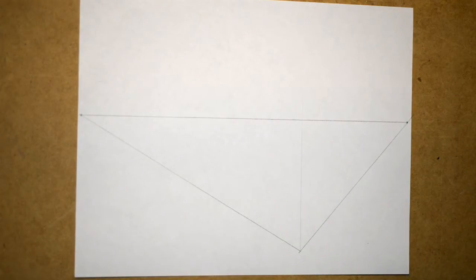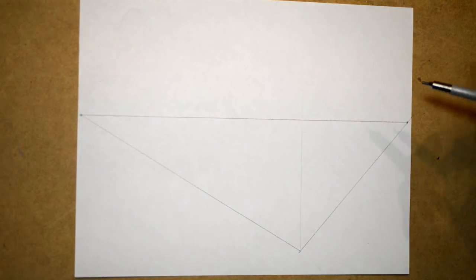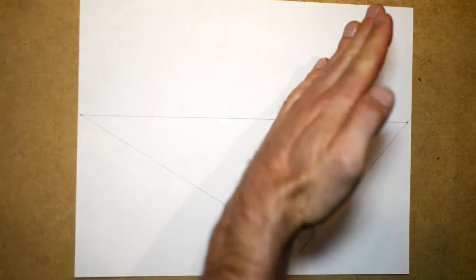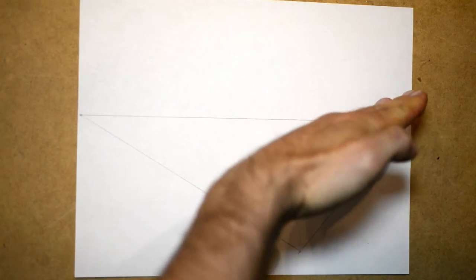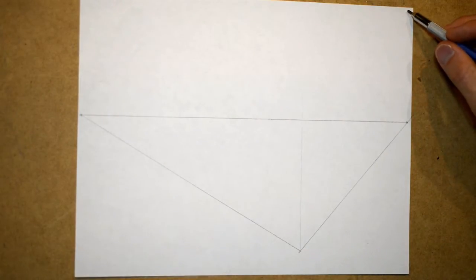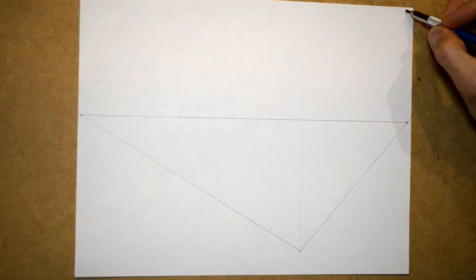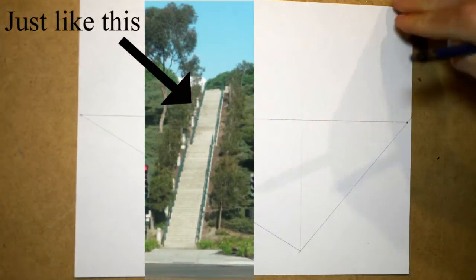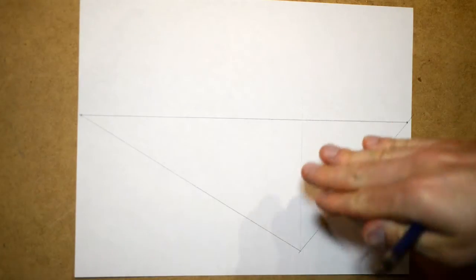I've placed this long vertical line to show you where the edge or corner of the stairs is going to be located. To set up stairs, there are a few rules. First, you want to make sure that the slope — the incline of the stairs, how high or flat the stairs are sloped — that incline is determined by how high you place the point above the horizon line. If you place your slope point high above the horizon line, you're going to have a really high-angled staircase, roof, pitch, or box opening.